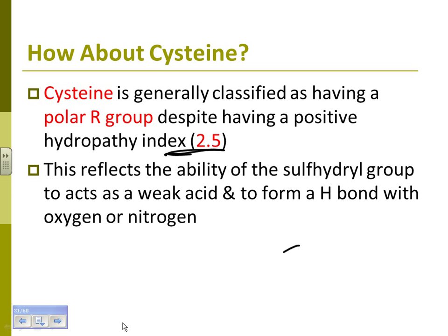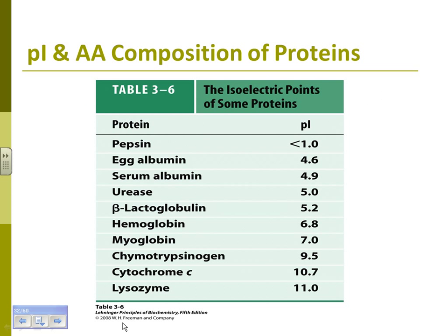Cysteine has a very high hydropathy index but we don't talk about it much because it does disulfide bonding. Cysteine's SH can also form hydrogen bonds. Know that pepsin operates at a very low pH — the PI is correlated with pH — and lysozyme is a favorite example for something at a very high or basic pH.